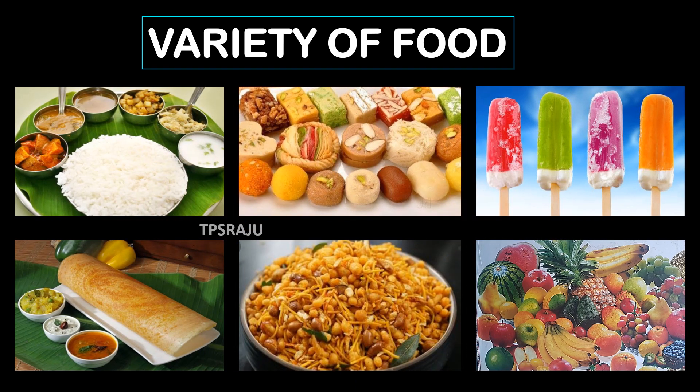We eat different types of food in our day to day life. For example, we take meals with different curries like sambar, dal, chicken, chutney, etc. Diffins like roti, puri, dosam, idli, etc. Sweets like jangri, laddu, kowa, etc.